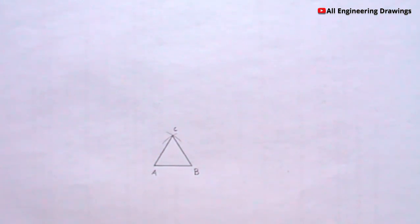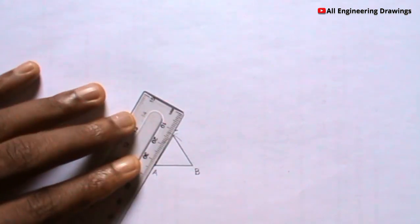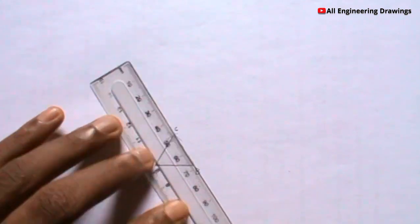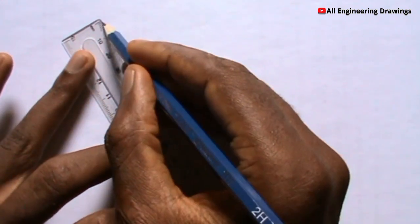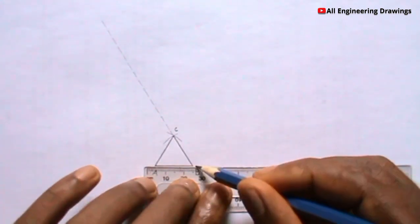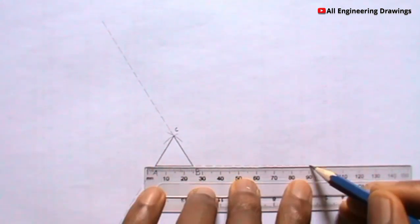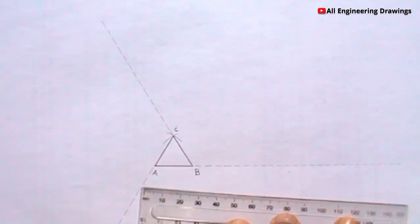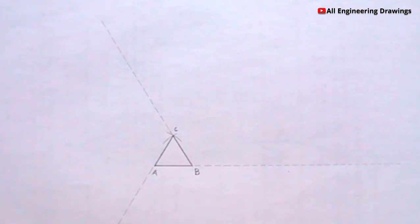Now we have our triangle, so it is time to produce the involute. First we have to draw some lines, then place your compass on point A, the A end of the line.